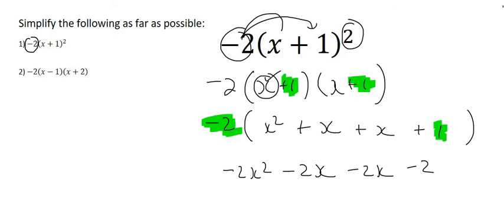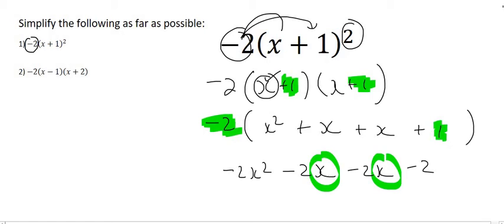The last step would be to go and identify any like terms. And we do have like terms. We've got an x over there and an x over there. And so I'm going to first just write down minus 2x squared because that stays as it is. Then minus 2 minus 2, well that's minus 4x. And then this minus 2 at the end will just be written as it is. And that'll be the answer for that one.